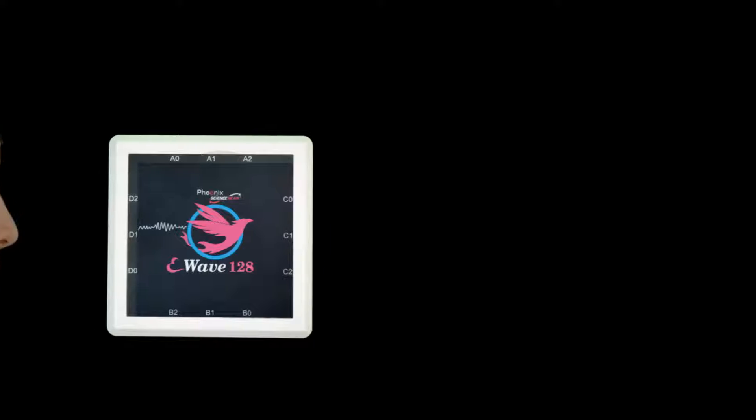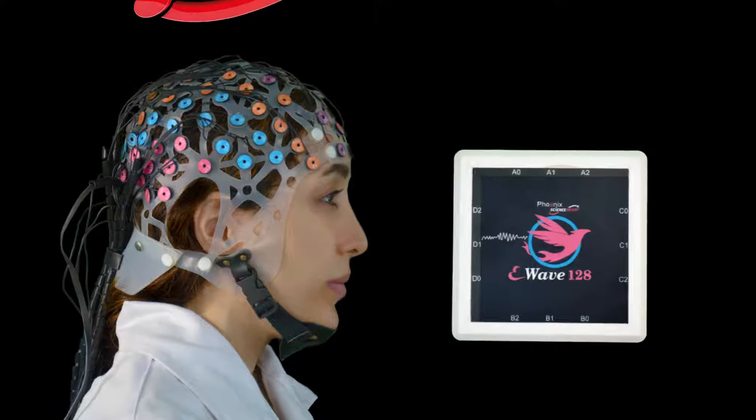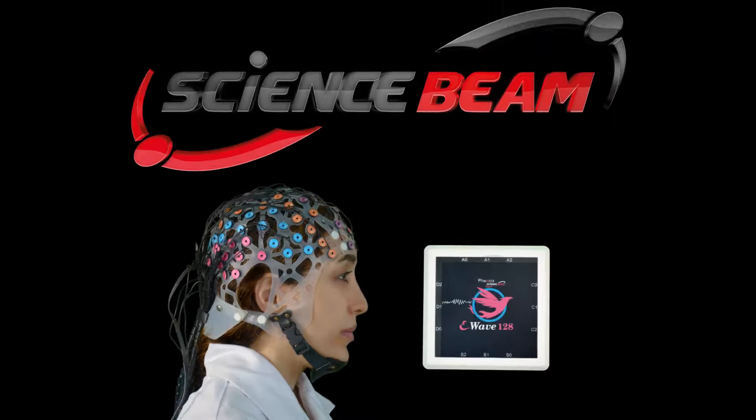In this video we are going to show you how to use the eWave device for EEG and ERP recording. The 32-channel eWave plus system is designed and manufactured by Science Beam for EEG research purposes. It provides a wide input sensitivity to record various bio signals such as EEG, EMG, ECG, and EOG.